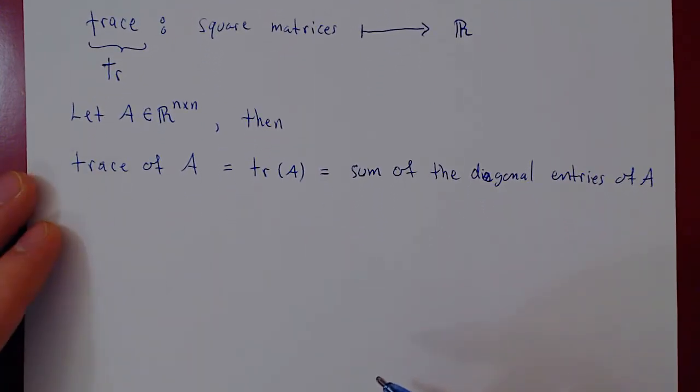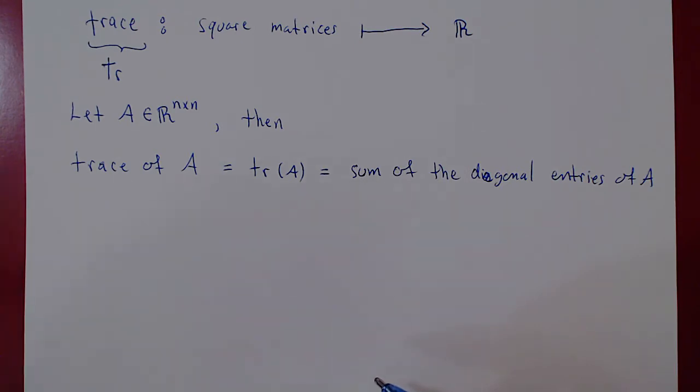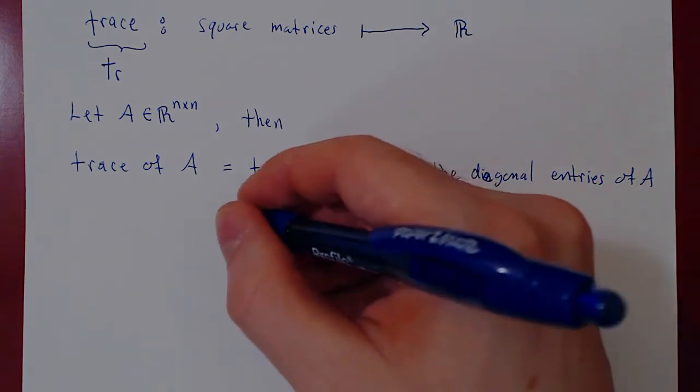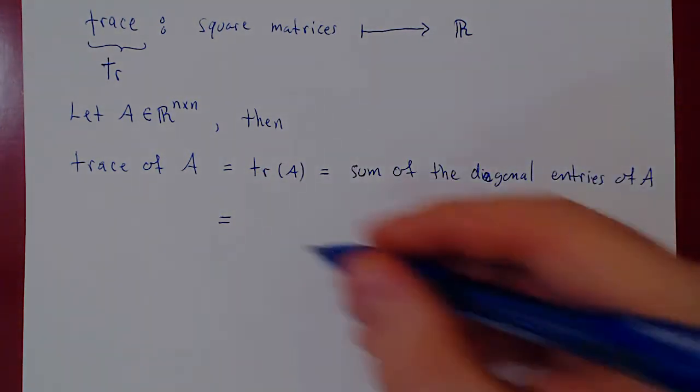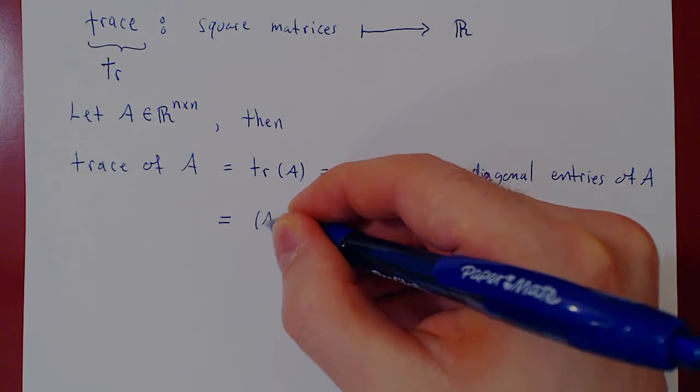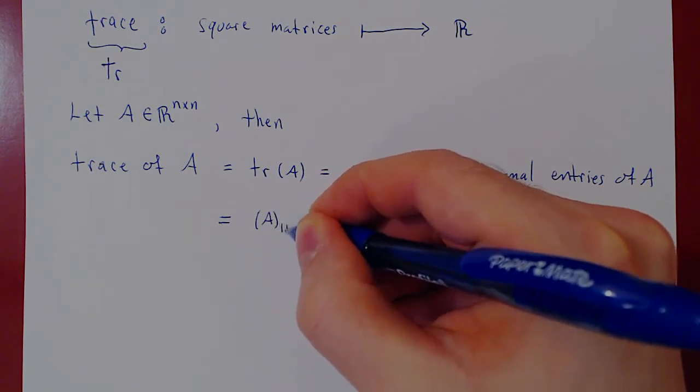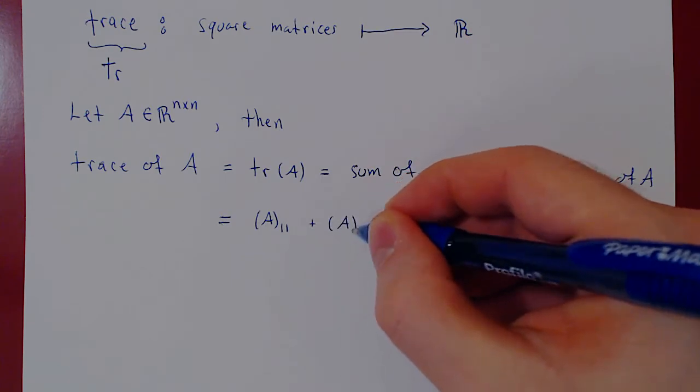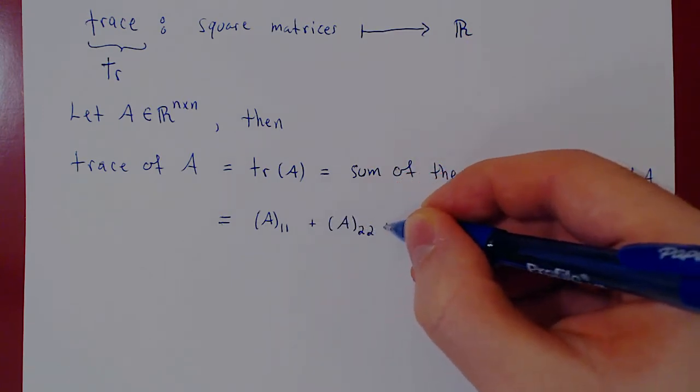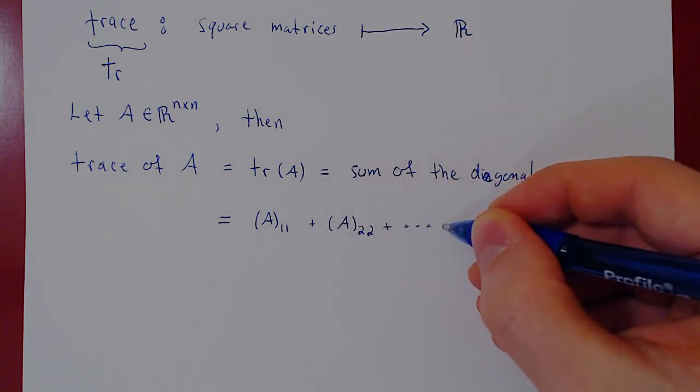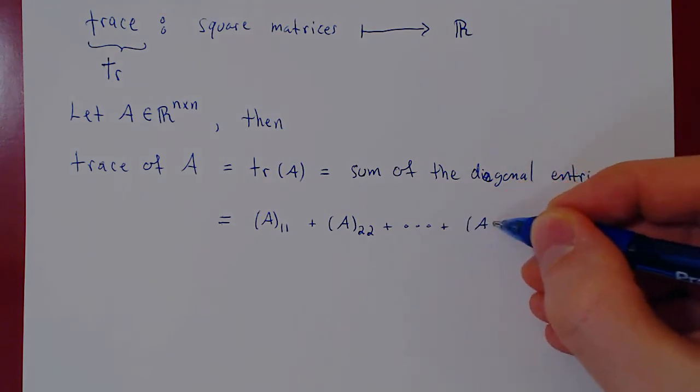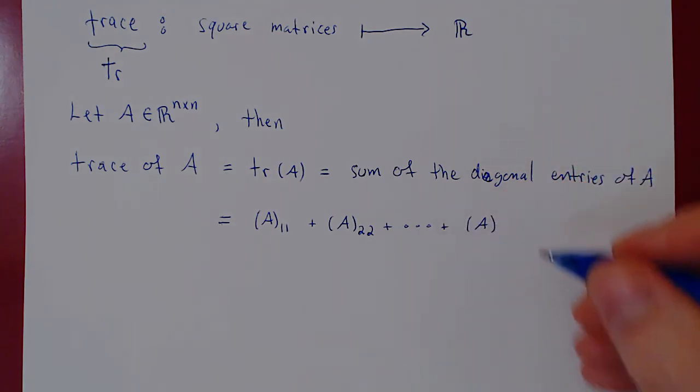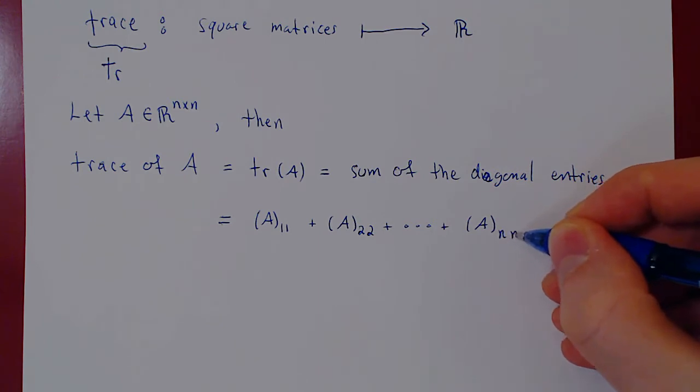But to prove properties of the trace, you will need your basic properties of summations. So, well, if you think of it, that's the entry in row 1, column 1, plus the entry in row 2, column 2, plus dot dot dot, up to the nth entry on the main diagonal. So this is the entry in the nth row, nth column.